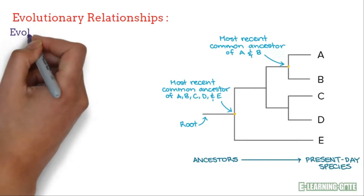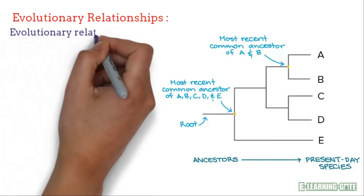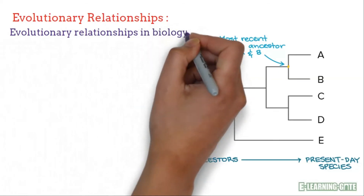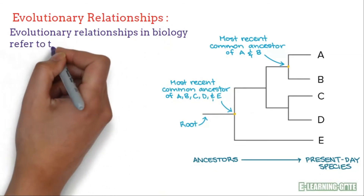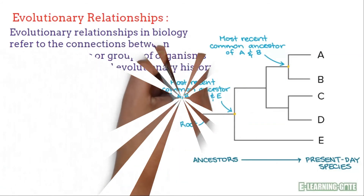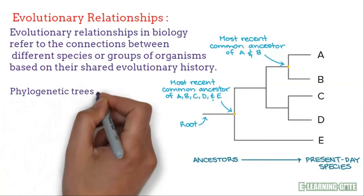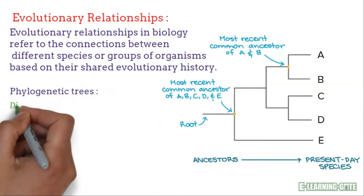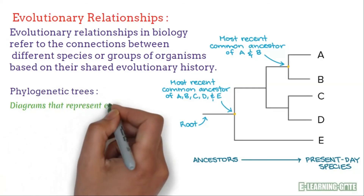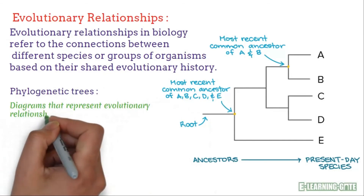Evolutionary relationships in biology refer to the connections between different species or groups of organisms based on their shared evolutionary history. This relationship is represented by phylogenetic trees — diagrams that represent evolutionary relationships among organisms.